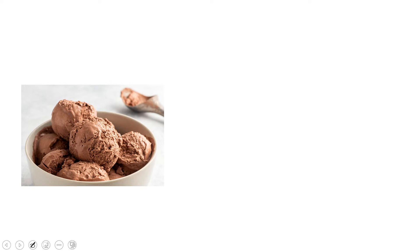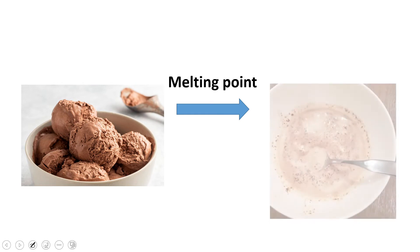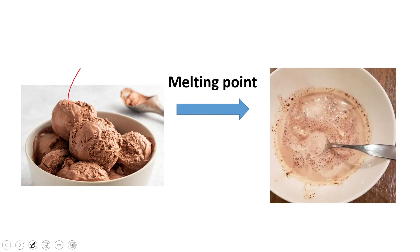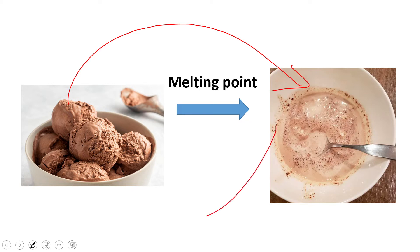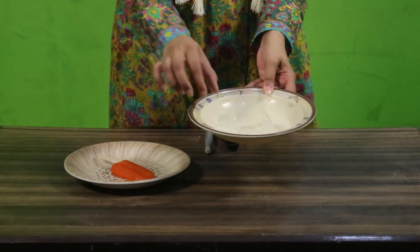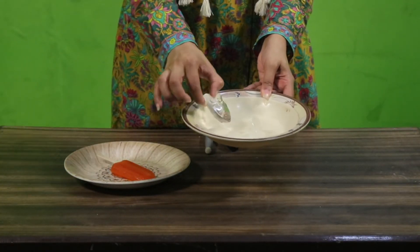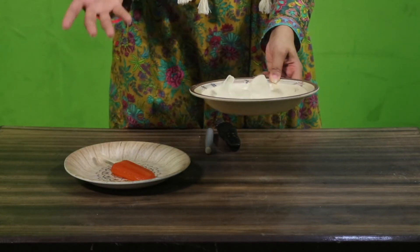Now let's have a look at the ice cream. It has started melting after being taken from the freezer — you can see it has started melting, because the temperature is more than zero degrees.